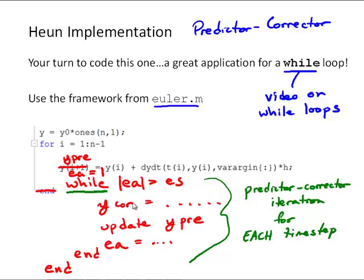So we have a while loop doing the predictor-corrector iteration nested inside a for loop moving through the time steps. I've given you some tips on how to set that function up, and I'm going to let you write that one this week to make sure you understand how to implement this predictor-corrector approach.